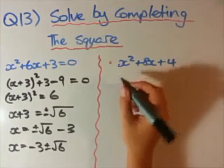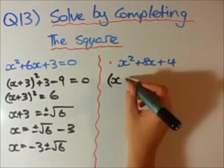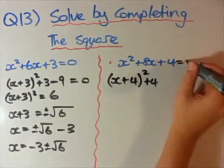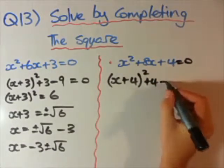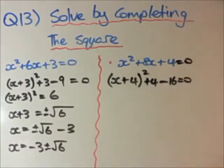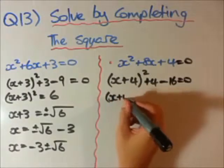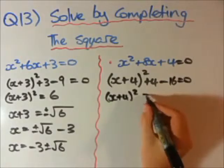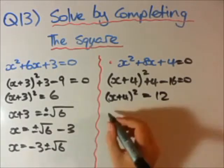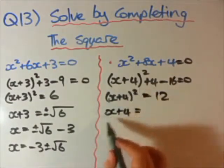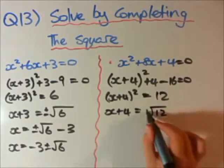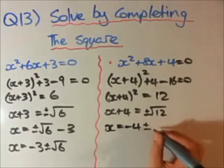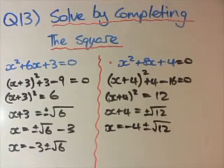Let's do the second one — completing the square again. Bracket, x, keep the sign, half of this number is 4. Close bracket, square. Whatever's left here is plus 4, this must equal 0, and then minus this number squared which is 16, equals 0. Tidying up: x plus 4 squared — now 4 minus 16 is negative 12, but I'll make that positive 12 on the other side. Solving for x: x plus 4 equals plus or minus the square root of 12, so x equals minus 4 plus or minus the square root of 12. Those are our two solutions from completing the square.